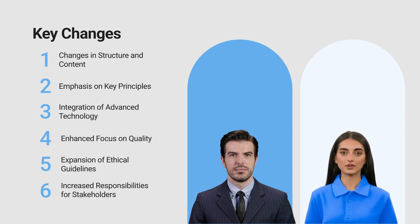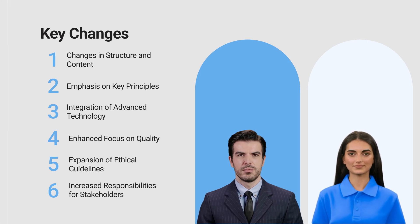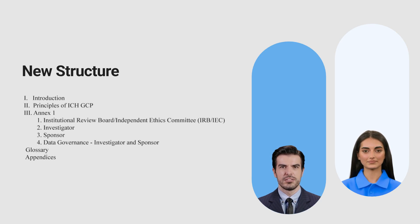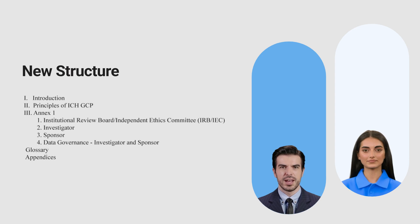Let's get started with an overview of the key changes. The new structure of the E6 R3 guidelines is designed to be more intuitive and comprehensive. The guidelines now include an introduction, a set of principles, Annex 1, a glossary, and several appendices. This updated structure simplifies navigation and ensures all critical areas are comprehensively covered. For instance, Annex 1 now clearly defines the roles and responsibilities of key stakeholders like IRBs, investigators, and sponsors.